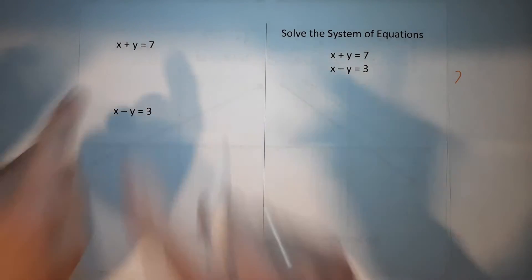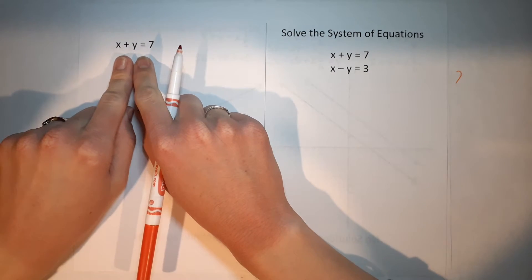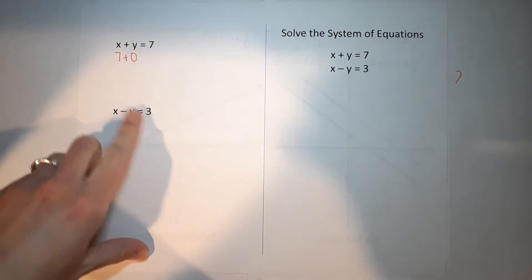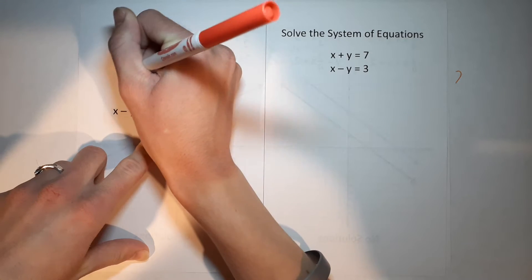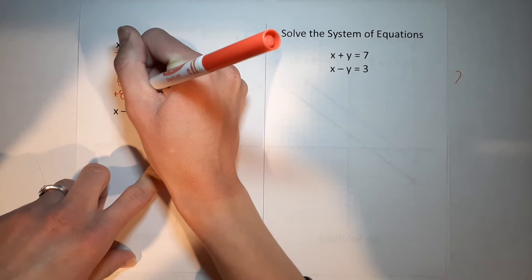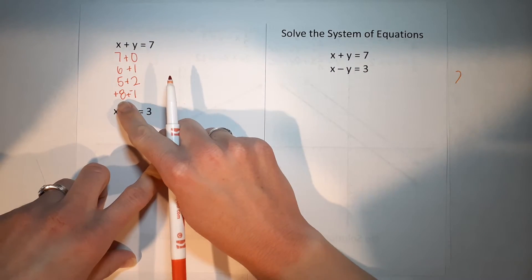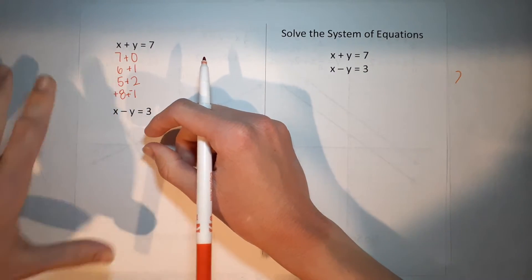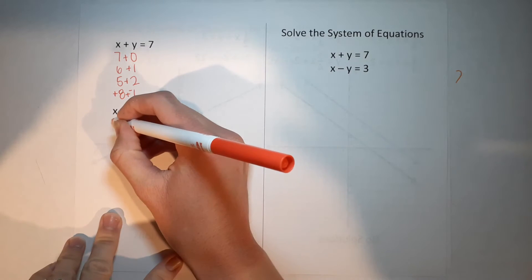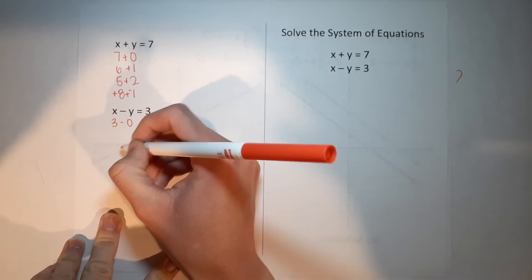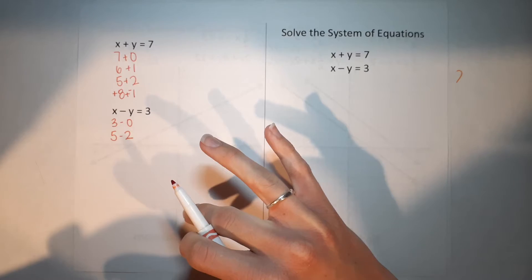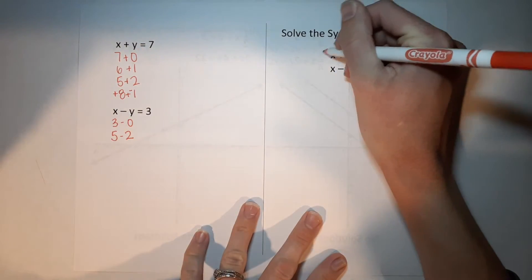If your teacher gives you a single equation and says tell me what x and y equal, every person in your class could come up with a different answer. We could have seven plus zero, six plus one, five plus two, negative eight plus one — you could just keep going forever giving answers to that same equation. Same goes for the other equation.